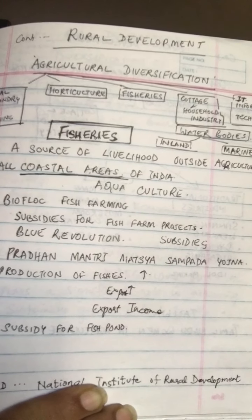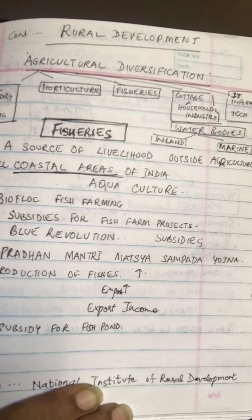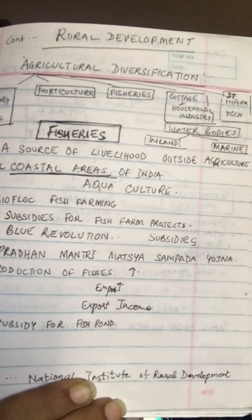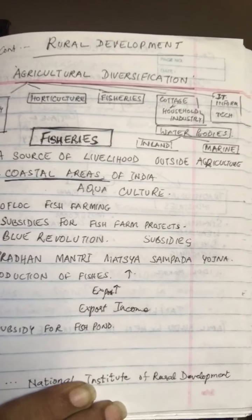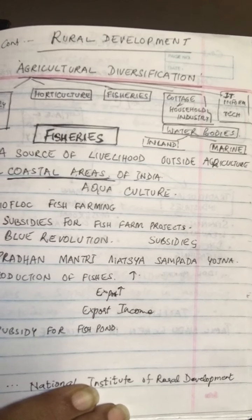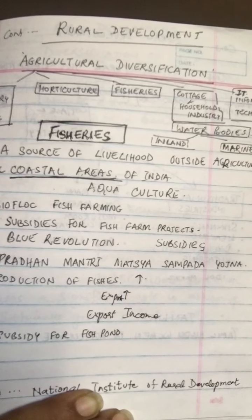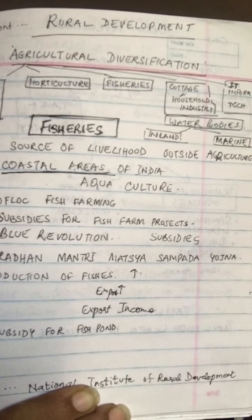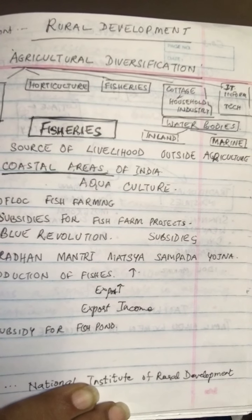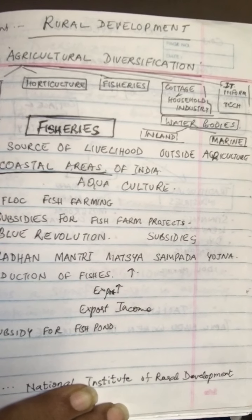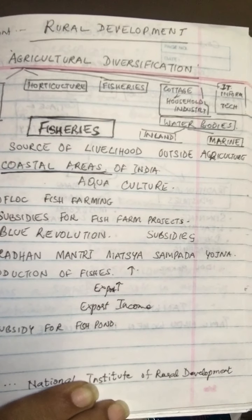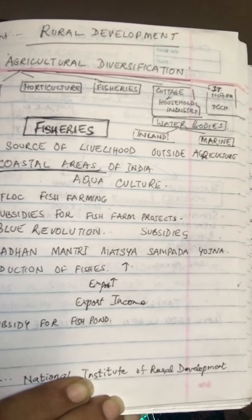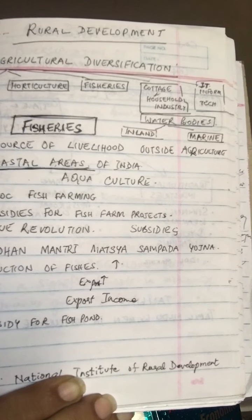India has increased allocation and budget for newer technologies in fisheries and aquaculture. Fish production from inland sources accounts for about 64 percent of the total fish production, while 36 percent comes from the marine sector. Fish production accounts for around 0.8 percent of total GDP. West Bengal, Andhra Pradesh, Tamil Nadu, Gujarat, and Kerala are the major fish-producing states.